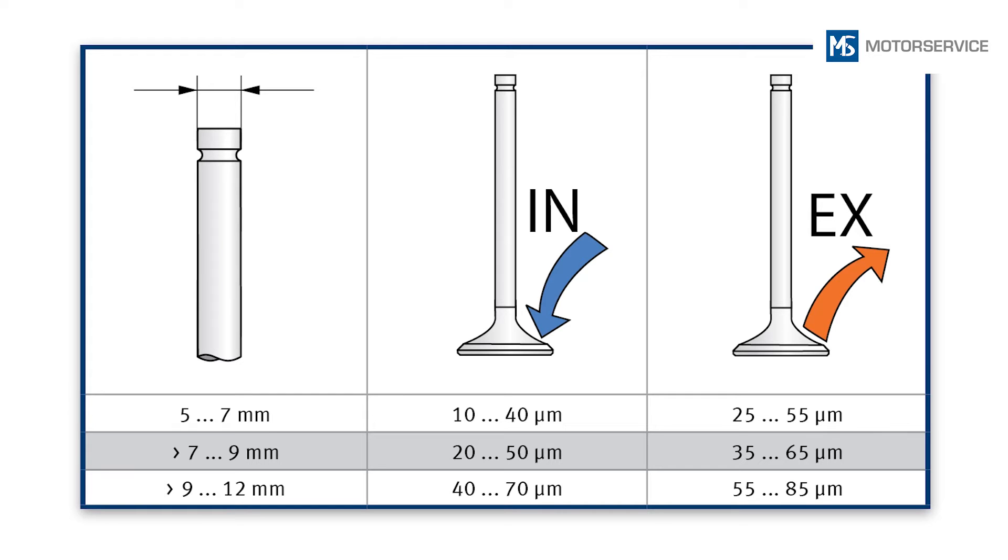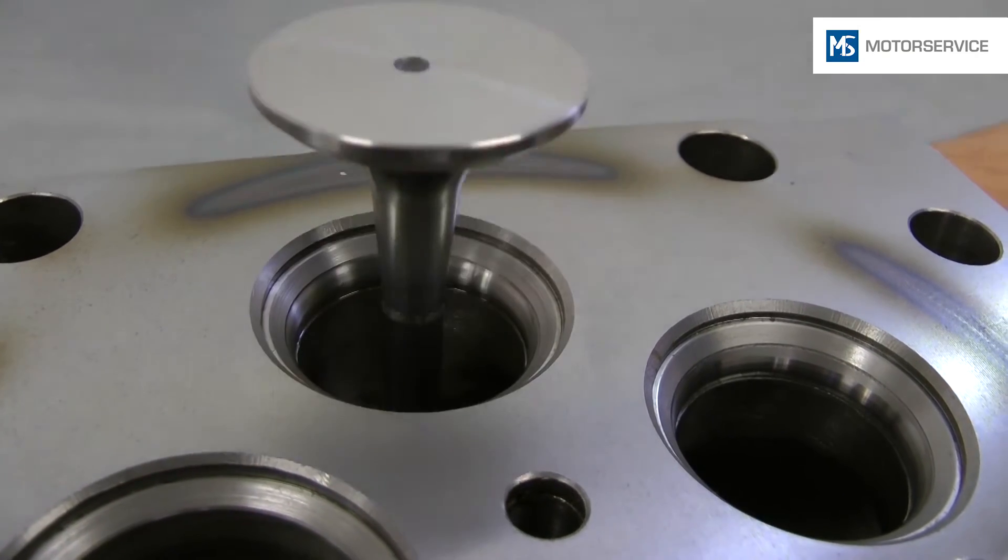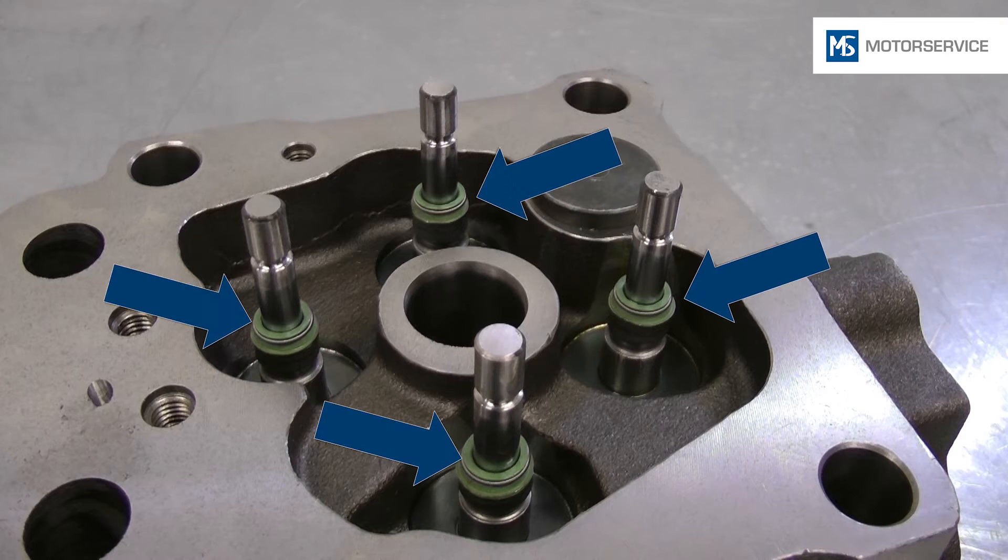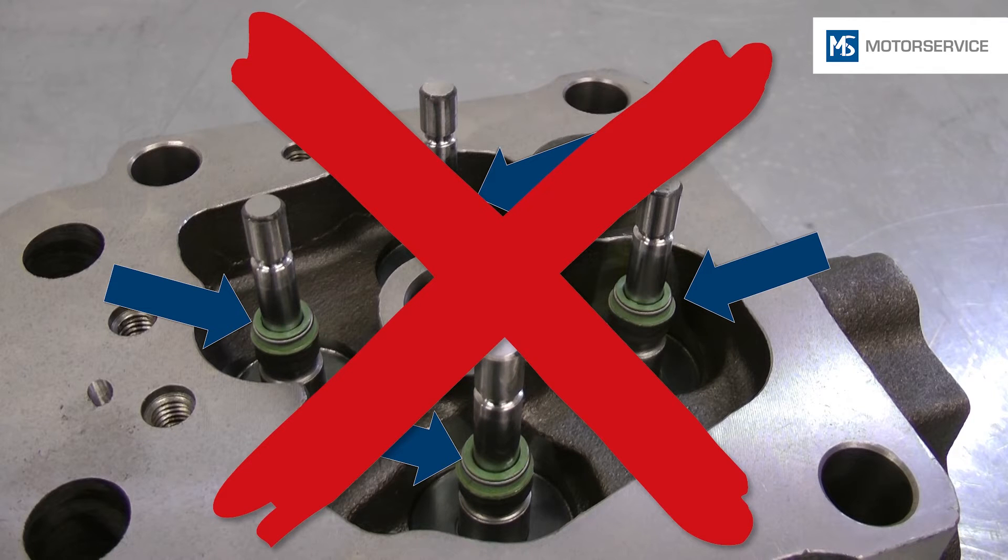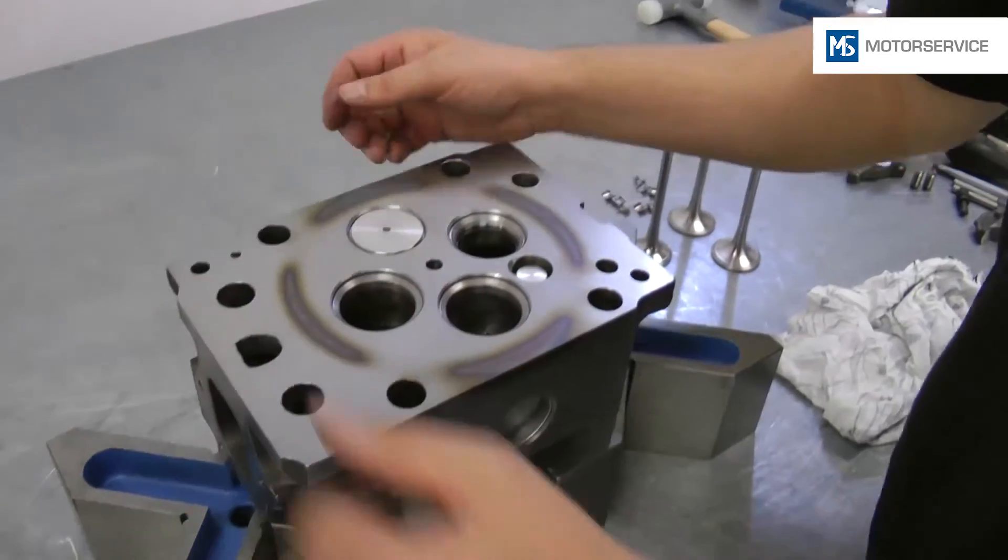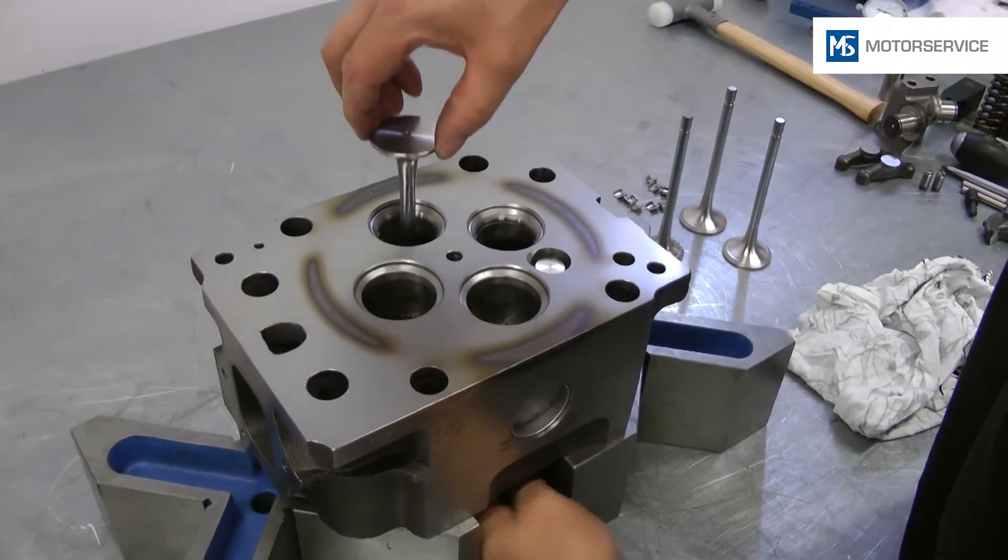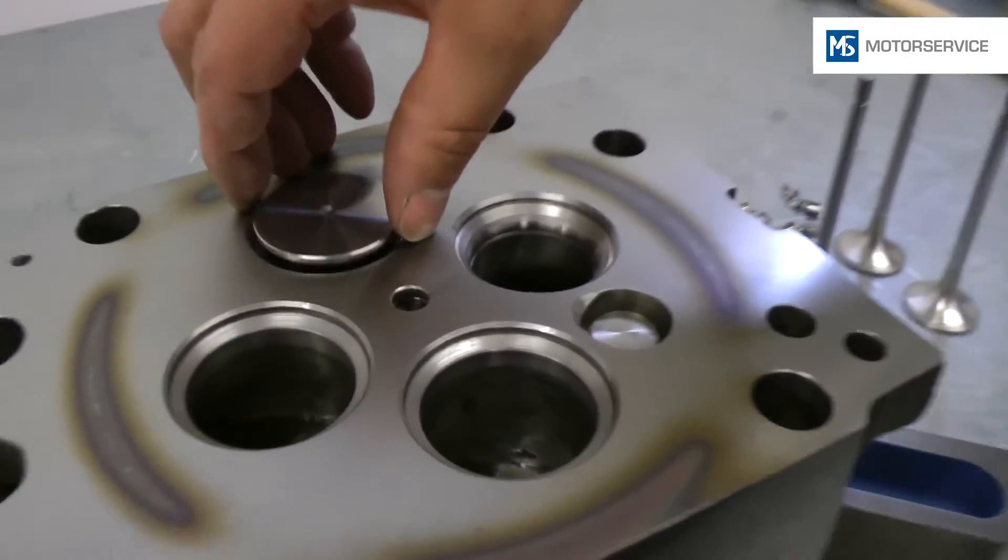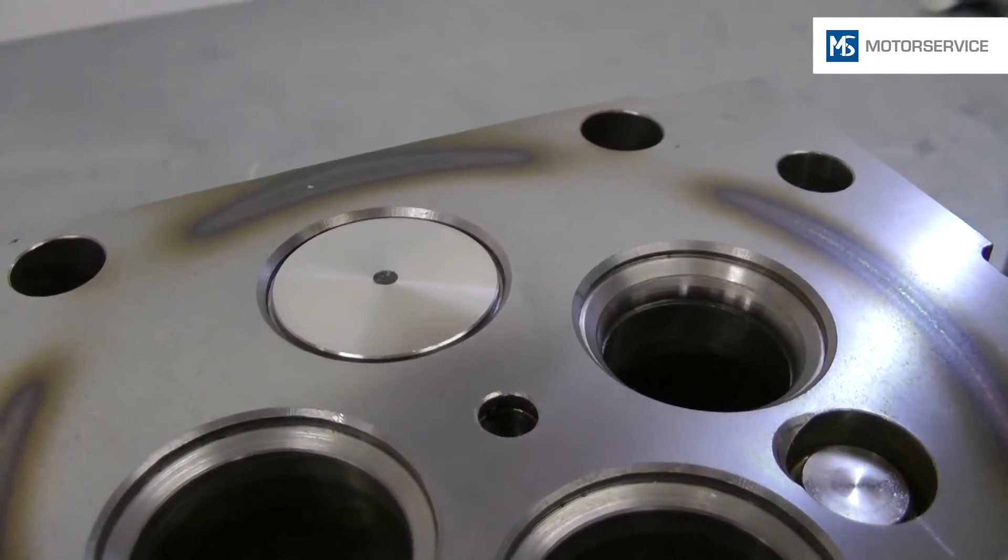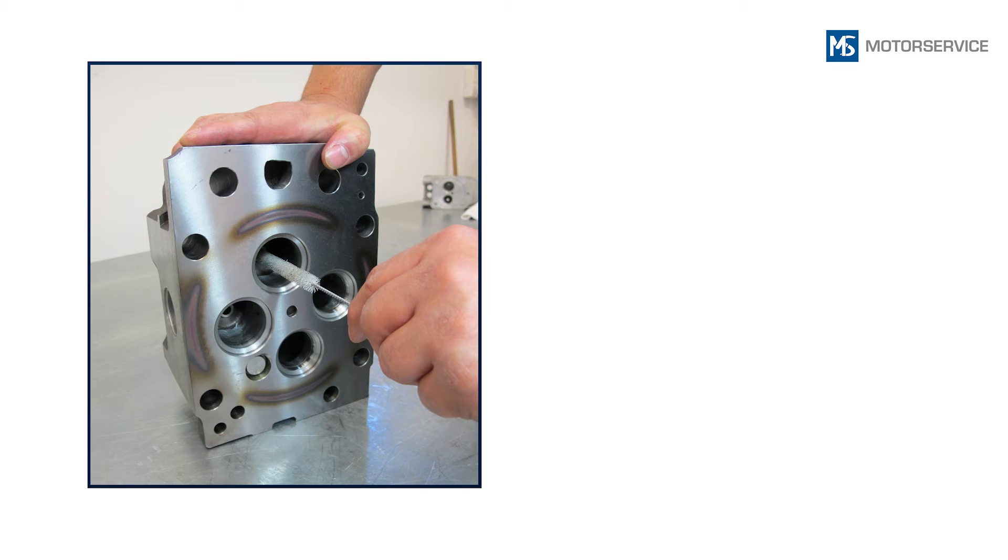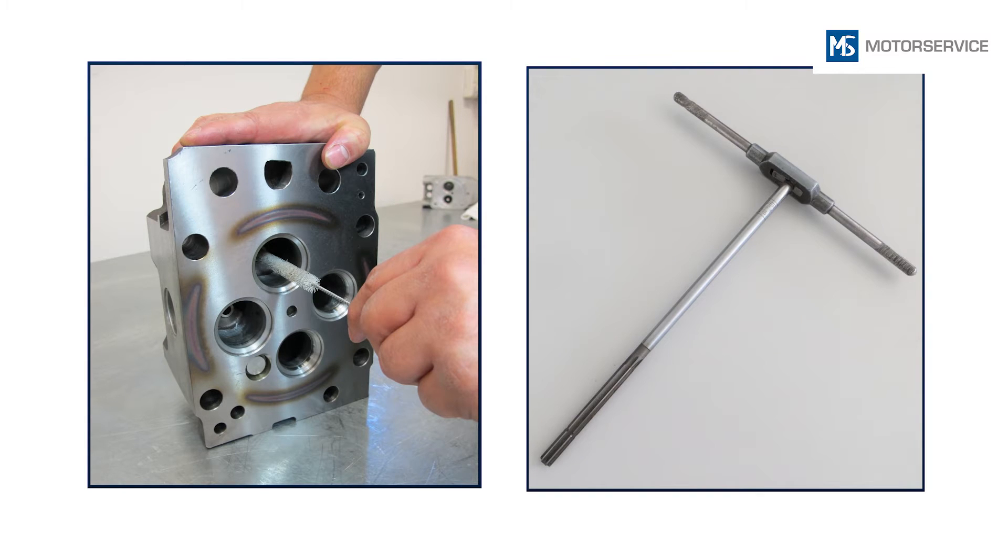After checking the valve guide clearance, the freedom of movement of the valves must also be checked. The valve stem seals must not be installed for this. The clean valve must glide into the clean valve guide without resistance during testing. If the valve does not jump back a little upon impact, there is a problem with the clearance or geometry. The valve guide must be cleaned again and reworked with a reamer if required.